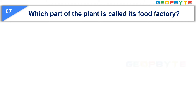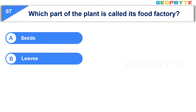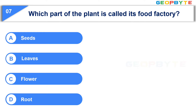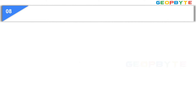The seventh question is: Which part of the plant is called its food factory? Option A: Seeds. Option B: Leaves. Option C: Flower. Option D: Root. Your time starts now. Your time is up and the correct answer is Option B: Leaves.